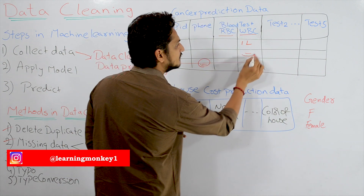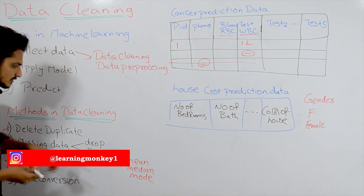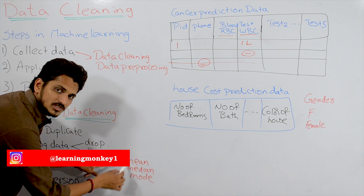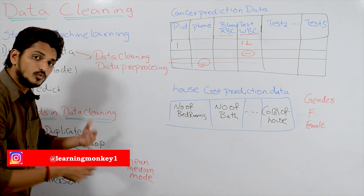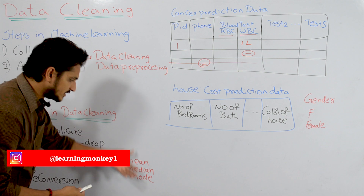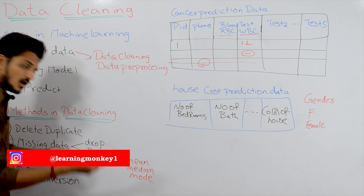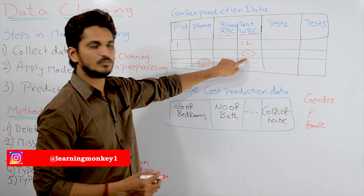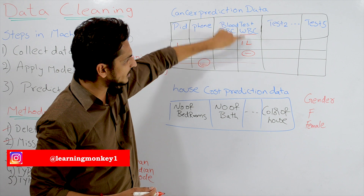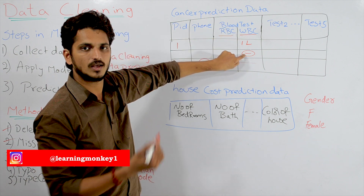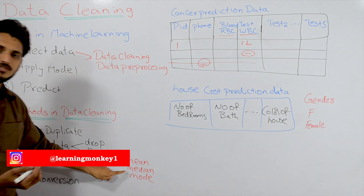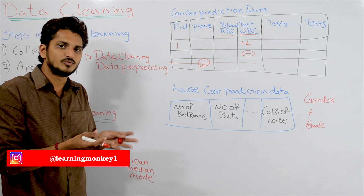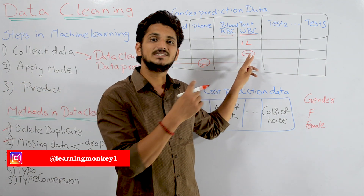If we are having a missing data value, these are some methods to replace it — though they are also not standard methods; based on domain knowledge, we choose the appropriate one. Some methods are: replace with the mean value — take the mean of all column values and replace the missing value with it; replace with the median value; or replace with the mode value. These are some of the methods used in handling missing values.